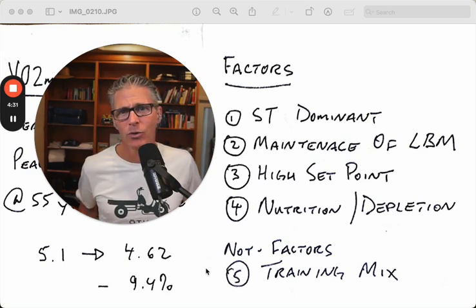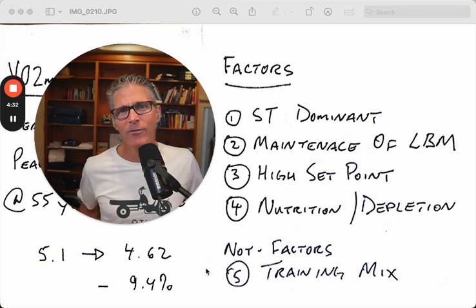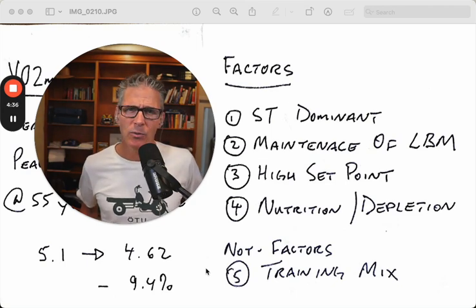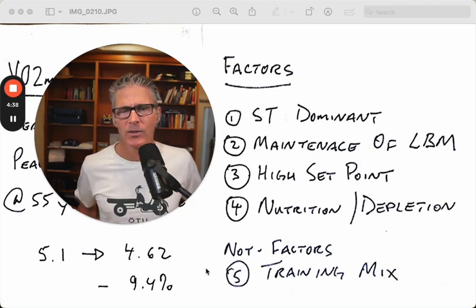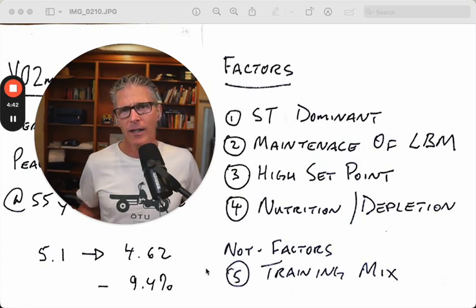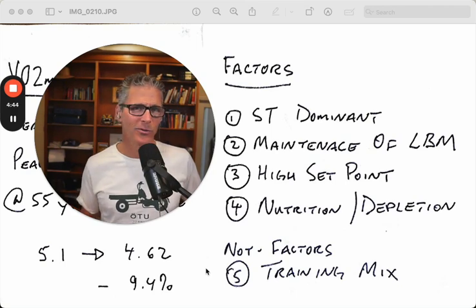ST dominant—slow twitch dominant. I was never a particularly explosive athlete. There's probably going to be some genetic factors in being able to maintain VO2 max with age, slow twitch versus being an explosive athlete.